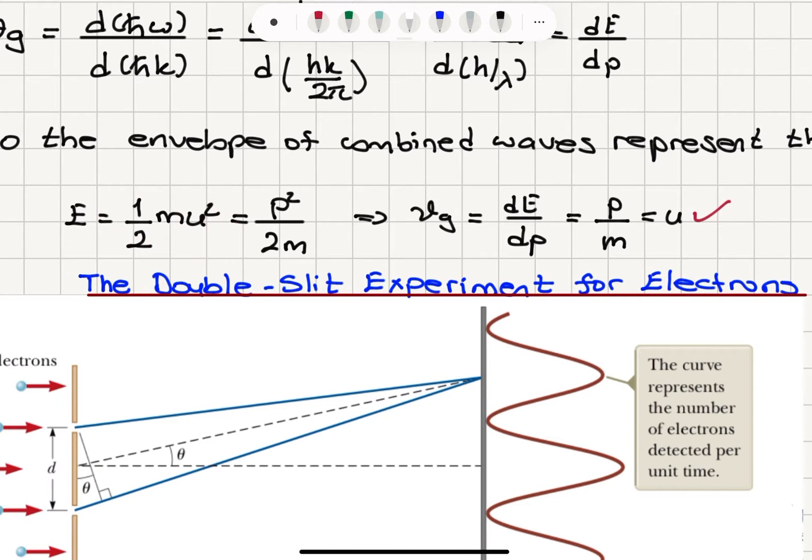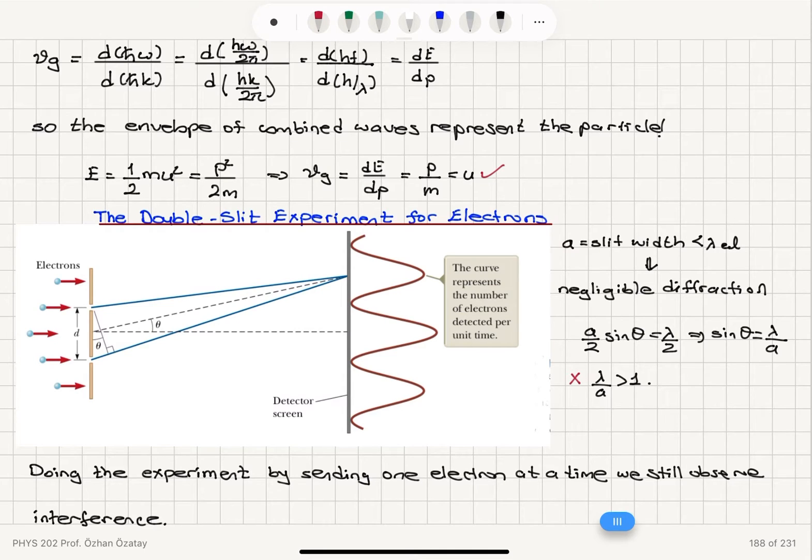So you can see that here, if the energy is 1 half mu squared, which is p squared over 2m, if you take a derivative dE dp, you will get 2p over 2m, which is p over m, which is u, the speed of the particle, and that is the group velocity of the wave representing the particle.